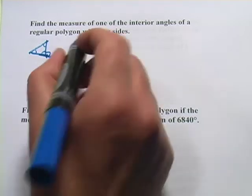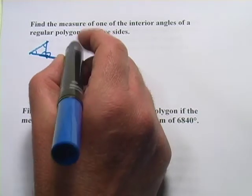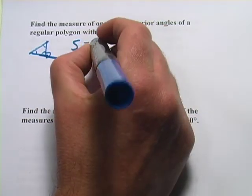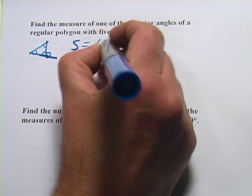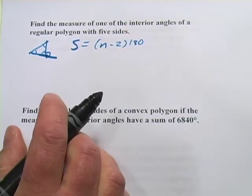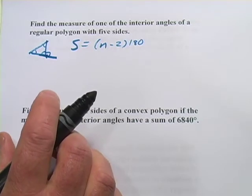So, one formula I think you already know would be for the sum of the interior angles of a polygon. And that's going to be the number of sides minus 2 times 180. And then there's another formula that's useful,